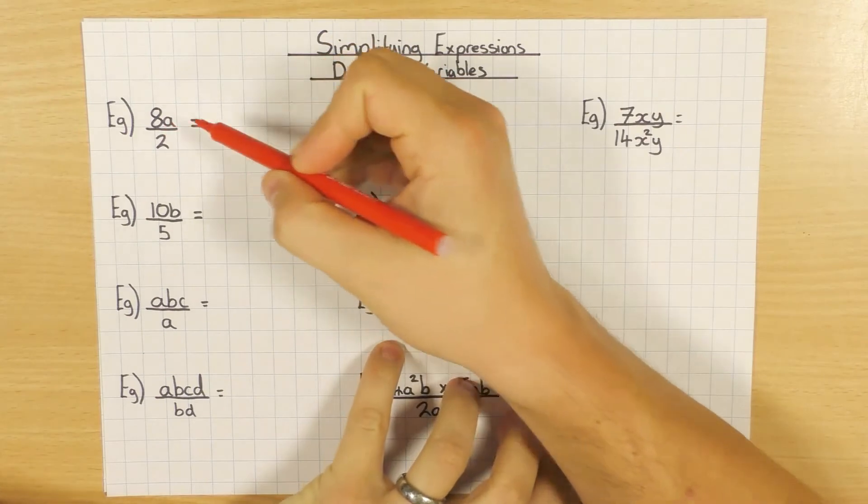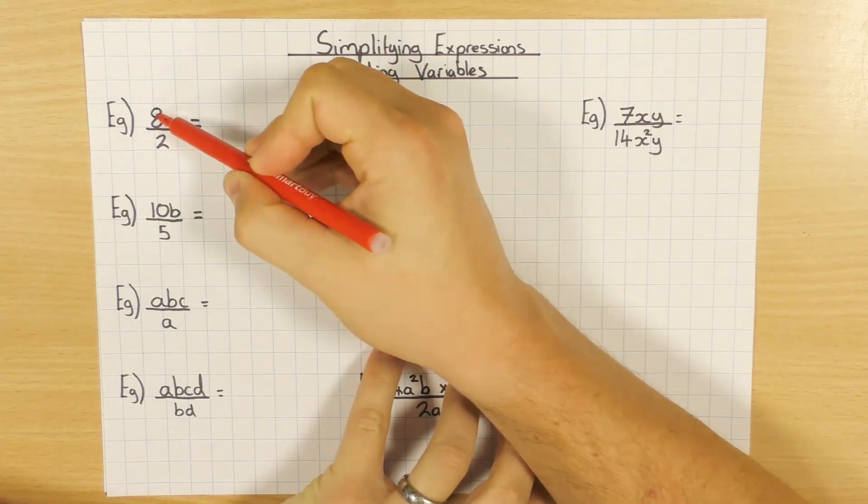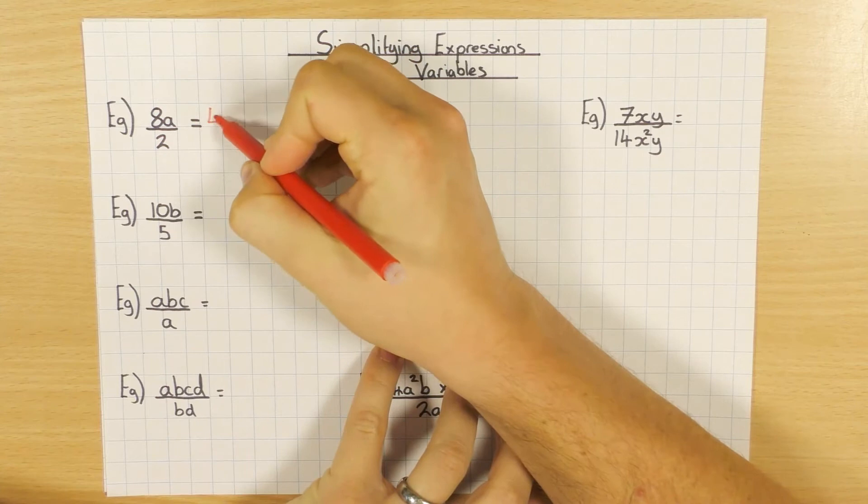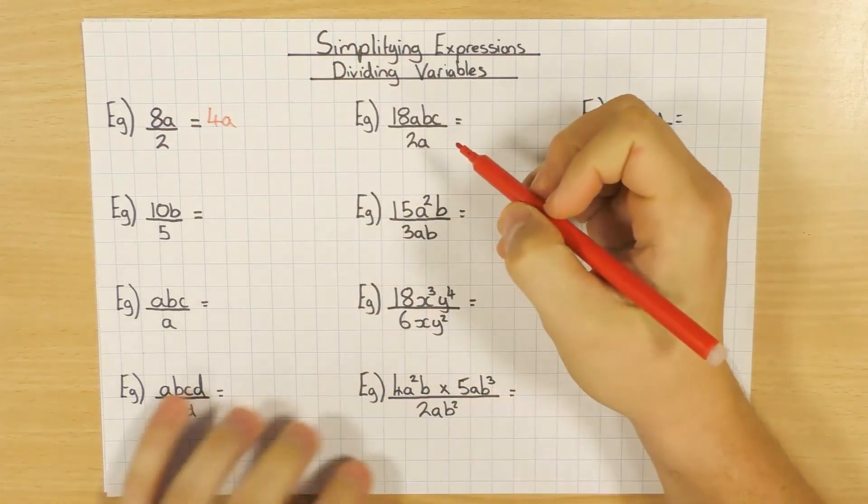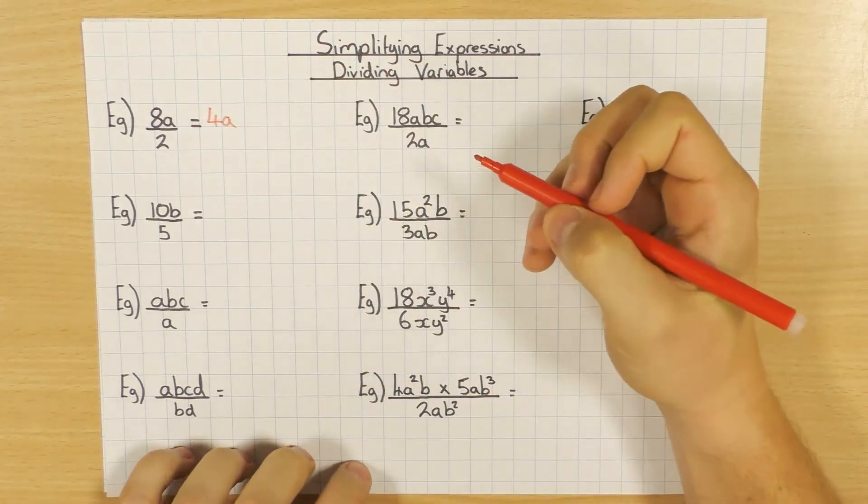This one here, very simple, we just divide the numbers. So 8 divided by 2 is 4, and we're left with an a. So that 8a divided by 2 is just 4a.